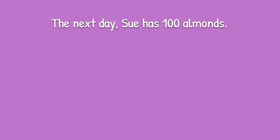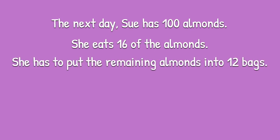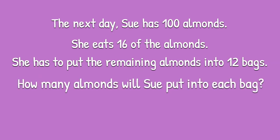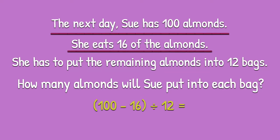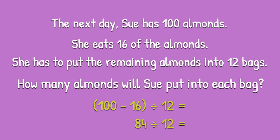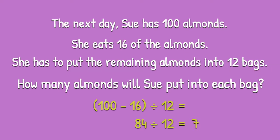The next day, Sue has 100 almonds. She eats 16 of the almonds, and she has to put the remaining almonds into 12 bags. She takes 16 away from 100, which will leave 84. She is then going to divide the 84 almonds between 12 bags. So, Sue will have 7 almonds in each bag.